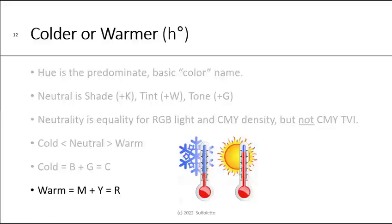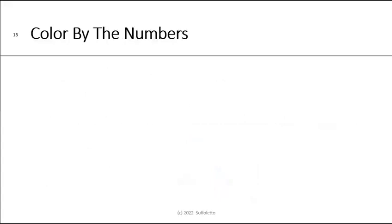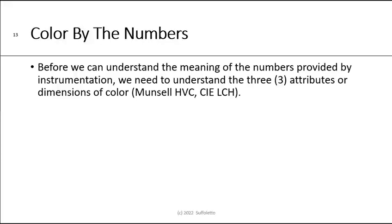If you think about lighting conditions — the correlated color temperature or CCT — illuminant A is a very warm color, where D50 is typically neutral, and D65 is on the cold, cool side. Now, although this presentation is titled visual color assessment, eventually we want to talk about how we measure color numerically with instrumentation. But before we can understand the meaning of the numbers provided by the instrument, we need to understand the three attributes or dimensions of color. This is typically done with Munsell — Hue, Value, Chroma — or CIE LAB and LCH.